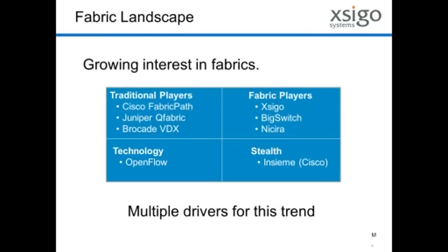What really motivated all of this was the growing interest in fabrics in the marketplace. There's a lot of innovation going on out there right now. It's really a gold rush when you look at all the things that have been introduced really since about November, December of last year. The amount of innovation going on from both new and established players has been tremendous, and this has really been happening in four quadrants. Traditional players — Cisco, Juniper, and Brocade — new fabric players specifically looking at fabrics such as Seago and Big Switch. There's also new technologies coming along like OpenFlow, and then players that are new and unknown, such as the Cisco Spin-In which is brewing.